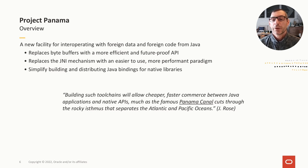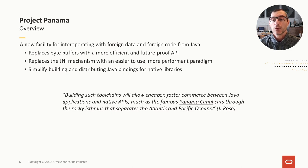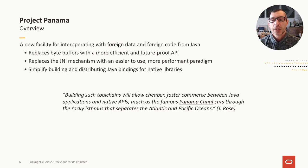Project Panama solves the problem of interacting with native libraries in three steps. First, it replaces the ByteBuffer API with a more modern and efficient API supporting deterministic deallocation out of the box. Second, it replaces JNI with an API that allows calling native functions directly from Java without intervening C or C++ code. Finally, Panama provides a new tool called JExtract to mechanically derive Java bindings from native library headers — just as the Panama Canal connects the Atlantic to the Pacific, Project Panama brings foreign functions and data closer to the JVM.